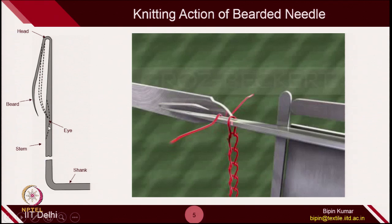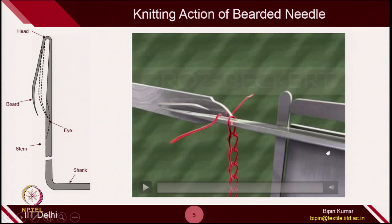There is no butt part on the beard needle — only the shank, which helps fix the beard needle on the machine bed. Instead of a bed, there is a bar on which this shank is placed. Here is a small animation showing how the loop is created with the beard needle. You can see an additional element helping in loop formation: the beard goes down, the old loop slides, the yarn is cast, the loop is formed, this element presses the beard, and then sliding is done.